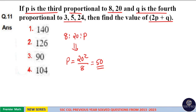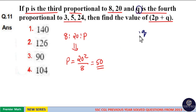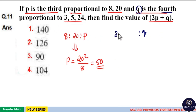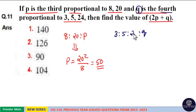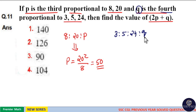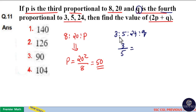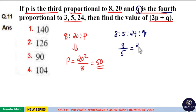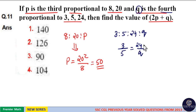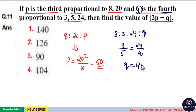Now P is 50. Q is the fourth proportional to 3, 5 and 24, meaning 3 is to 5 as 24 is to Q. So 3 divided by 5 equals 24 divided by Q. Since 3 goes 8 times into 24, Q equals 5 times 8, which is 40.